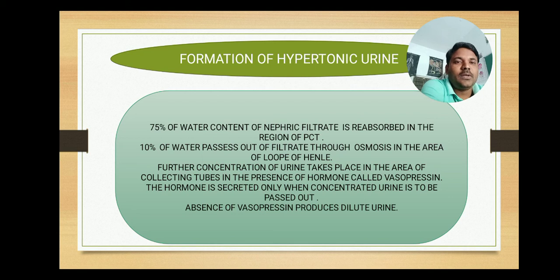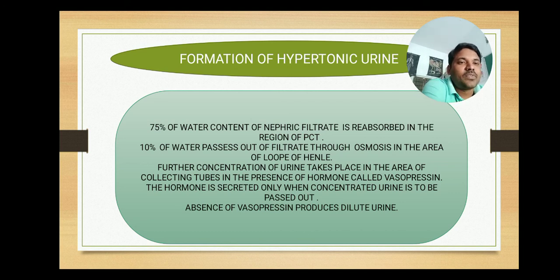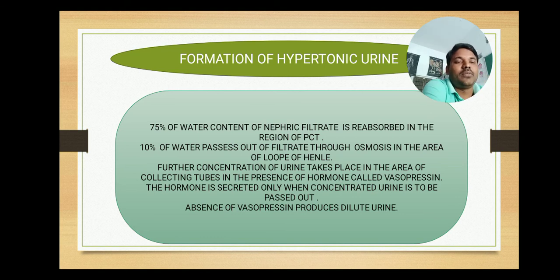Further concentration of urine takes place in the area of the collecting tubes in the presence of the hormone vasopressin. This hormone is secreted only when concentrated urine is to be passed out. Vasopressin is produced when there is a need to excrete concentrated urine — specifically when the water levels in the body are low.